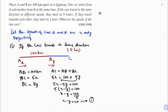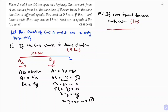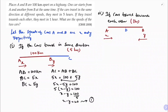Case 2: If they travel towards each other, they will meet in 1 hour. Drawing the diagram again — A and B are 100 km apart. Speed of A is x, speed of B is y. The cars travel in opposite directions and will meet at point D. Distance AD = speed × time = x × 1 = x, so AD = 1x.